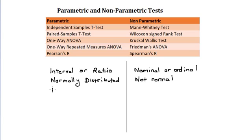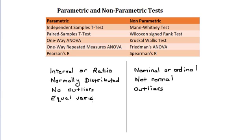If you have outliers in your data, you'll want to choose a non-parametric test. Parametric tests also require equal variances. If your variances are unequal, or if you don't know those variances, you have to use a non-parametric test.